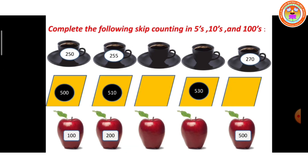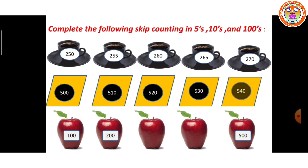Complete the following skip counting in 5s, 10s, and 100s. 250, 255, dash, dash, 270 — so after 255 comes 260, after 260 comes 265. Skip counting in 10s: 500, 510, 520, 530, 540. Skip counting in 100s: 100, 200, 300, 400, 500. Very good, children.